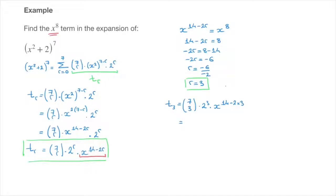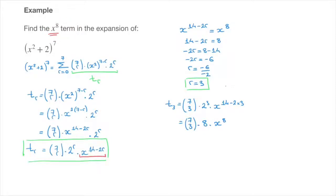That equals 7 choose 3, times 2 to the power of 3, which is 8, times x to the power of 14 minus 6, which is 8. And this x to the power of 8 confirms that we're indeed dealing with the x to the power of 8 term that we were trying to find.